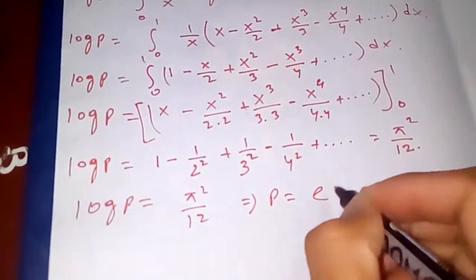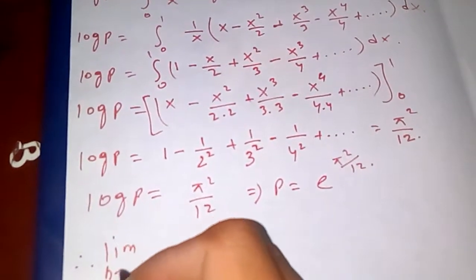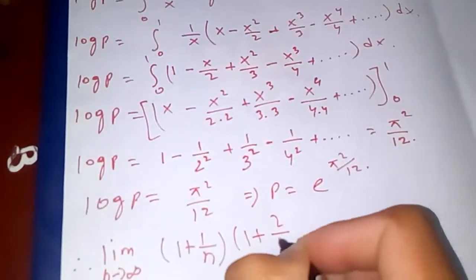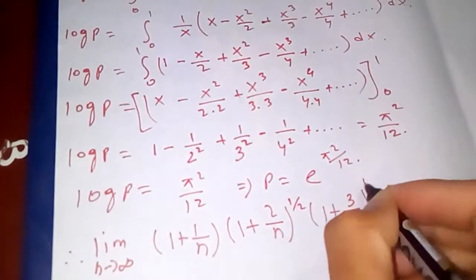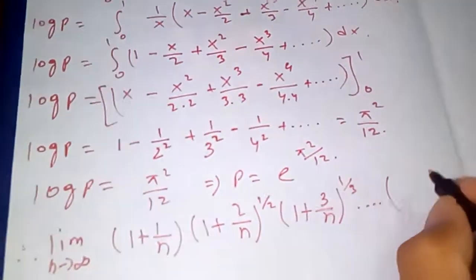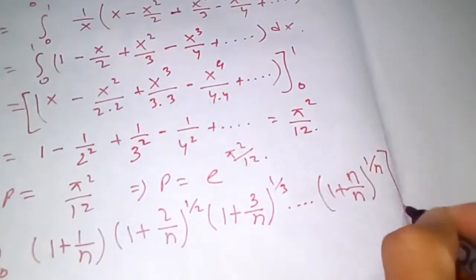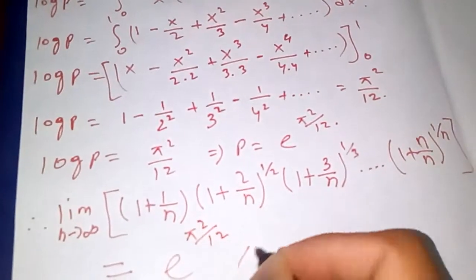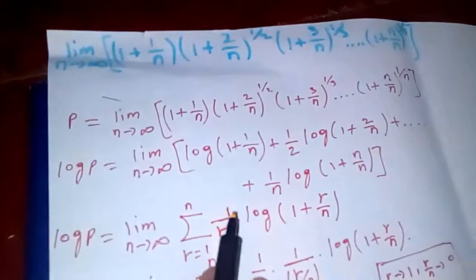We want to find P itself, since P is our original limit. So P equals e to the power π²/12. Therefore, limit as n tends to infinity of (1+1/n)(1+2/n)^(1/2)(1+3/n)^(1/3)···(1+n/n)^(1/n) equals e^(π²/12). This is how we can evaluate this limit using the definite integral approach.